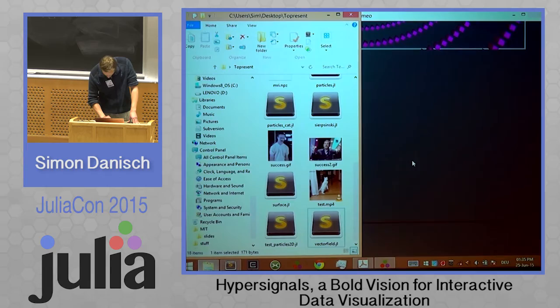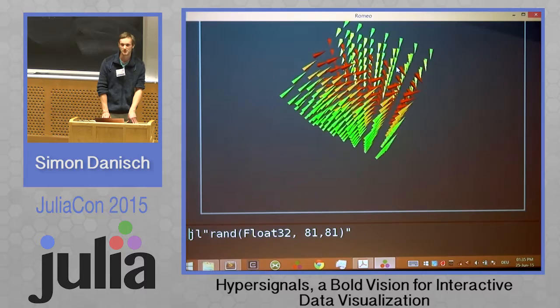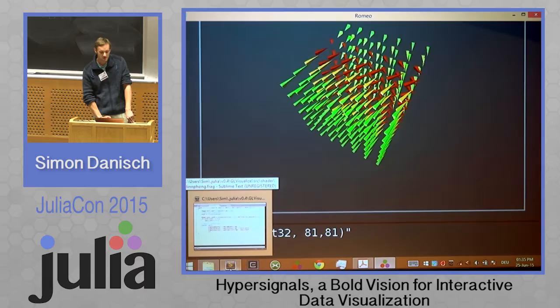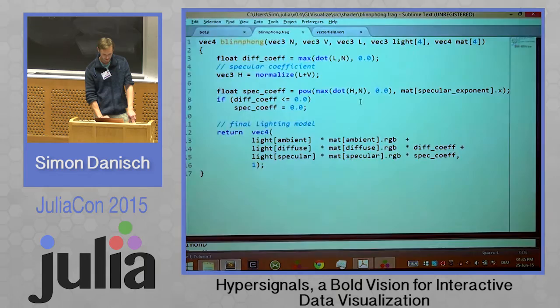Here is a vector field. Every value is basically animatable in GeoVisualize. I realized that with a nice library by Shashi called Reactive — it's an event system. So you can change the color, the positions, and everything for most visualizations. You can even change the OpenGL shader program, which looks like this.